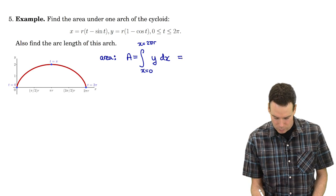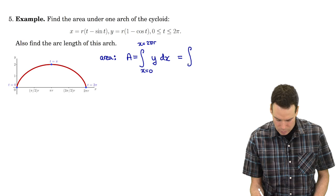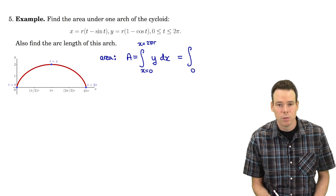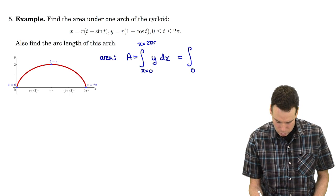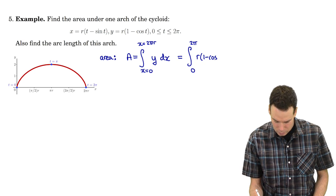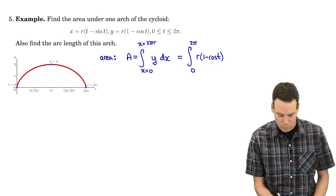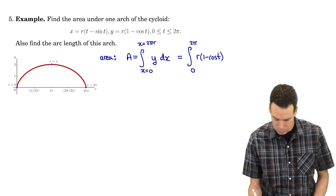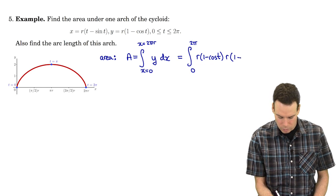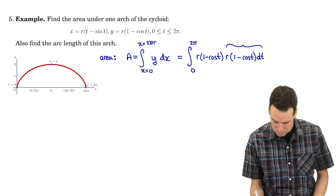In terms of the parametrized curve, we have to put everything in terms of the parameter t. The corresponding t value to x equals 0 is 0; the corresponding t value to x equals 2πr is 2π. The y function is r times (1 minus cos t), and dx is the derivative of the x function with dt tacked on — that's r times (1 minus cos t) dt.